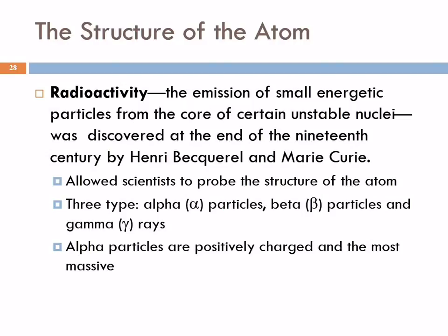The ones we're going to talk about right now are alpha particles. Alpha particles are positively charged and of these three types of radiation they're the most massive - they have the most mass. They're still crazy small.